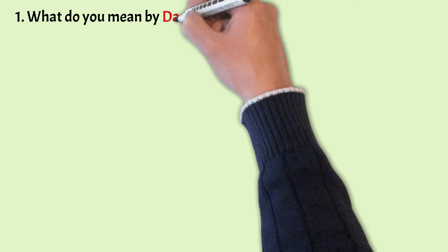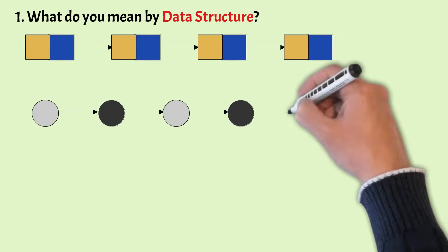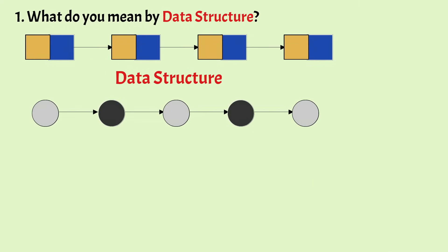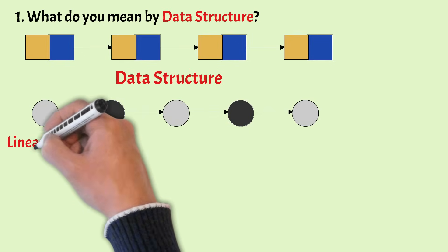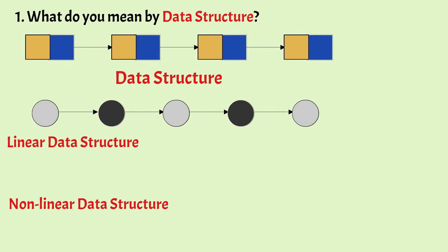First question: what do you mean by data structure? A data structure is a way to store and organize data in the main memory so that the data can be accessed and modified in an efficient way. Data structures are classified into two categories: linear data structure and non-linear data structure.